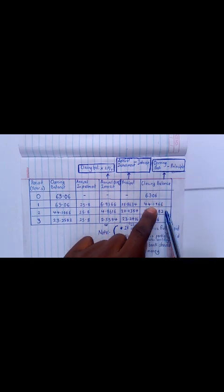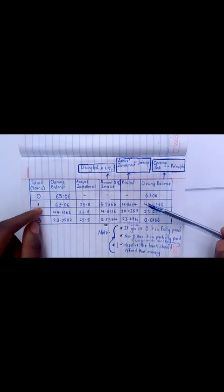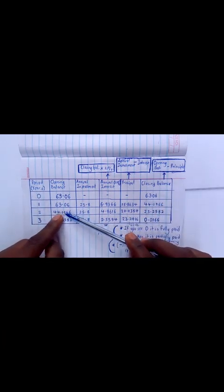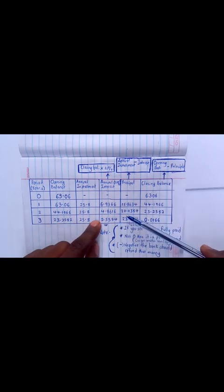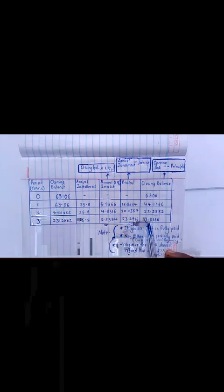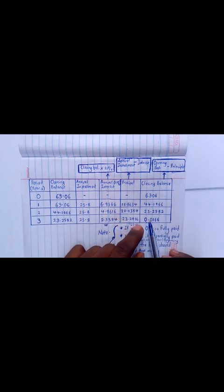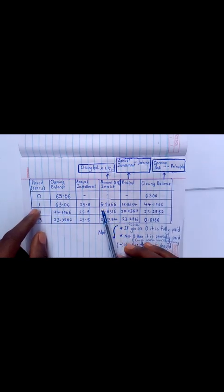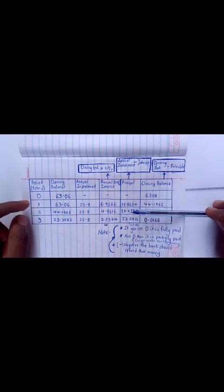The same way I've gotten this, it's the same way I'm going to get year two, then I come to year three. After getting this, it should give me a zero to show that I have cleared it, to show that I have fully paid this amount. Let me skip this - you apply the same format we've used here to get this.